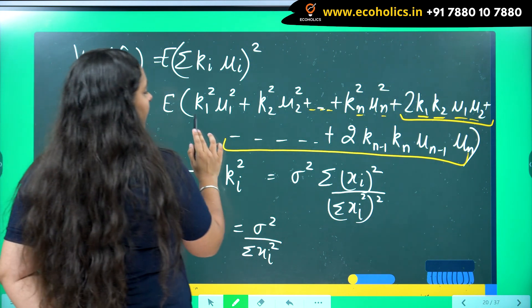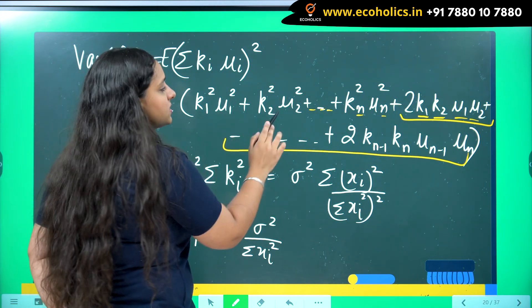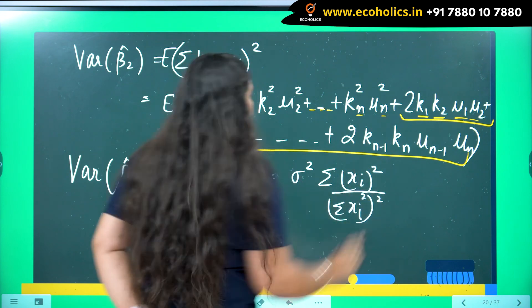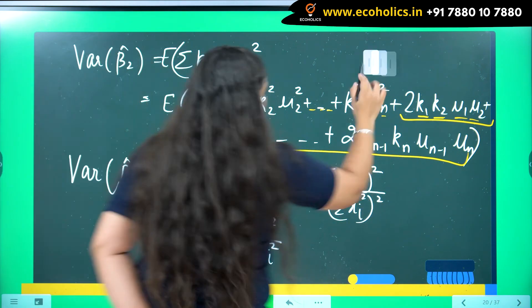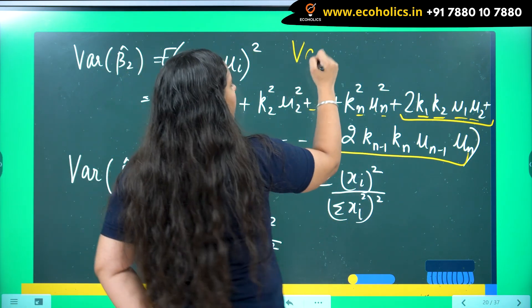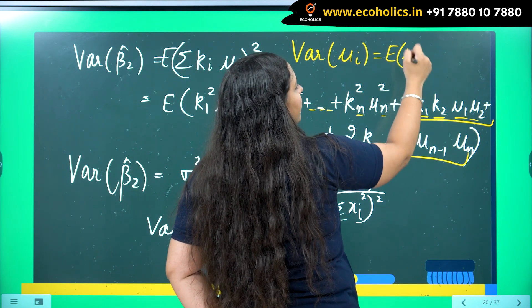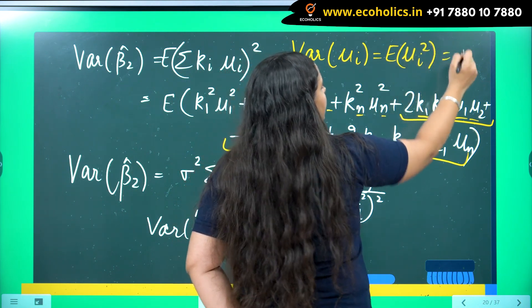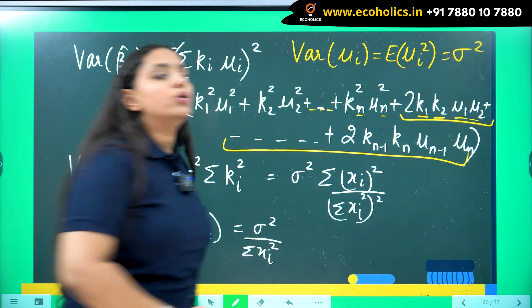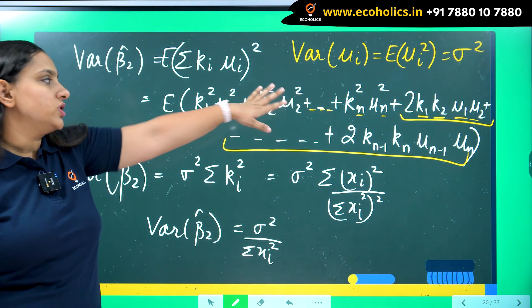Because of these reasons, all these terms over here are going to become 0 only. So I will be left with only k 1 square mu 1 square plus k 2 square mu 2 square, likewise. Now I know the variance of every error term which is equal to expected value of mu i square is equal to a constant due to the presence of homoscedasticity.